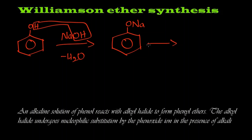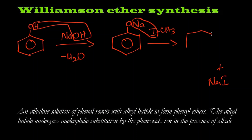Now we are going to react alkyl halide — that is methyl iodide (ICH₃) — with sodium phenoxide. What happens is the sodium and iodine leave as sodium iodide (NaI), and the CH₃ group attaches to the oxygen. So we get methyl phenyl ether.